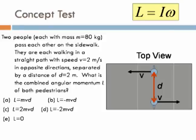Get ready for another concept test. Get your mobile phones out. So two people, each with mass m equal to 80 kg, pass each other on the sidewalk. They are each walking in a straight path with a speed of 2 meters per second in opposite directions, separated by a distance of 2 meters. What is the combined angular momentum L of both pedestrians? The choices are: L equals mvd, L equals negative mvd, L equals 2mvd, L equals negative 2mvd, and L equals 0. I also wanted to remind you that counterclockwise motion has positive angular momentum.